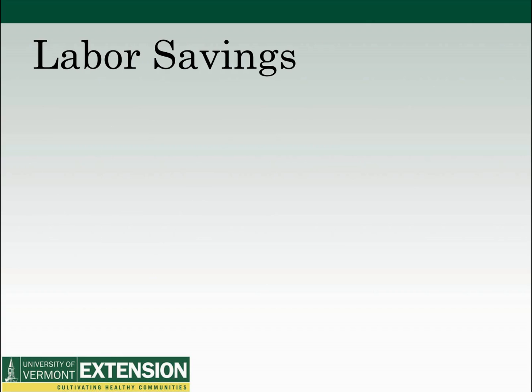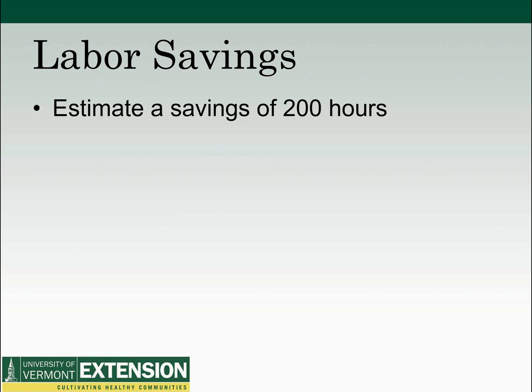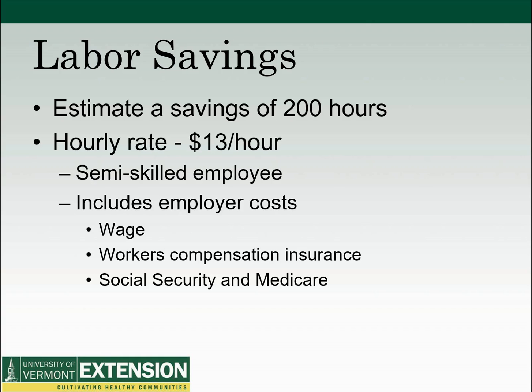Let's talk about how to calculate labor savings. We estimate that there will be savings of 200 hours. We're comparing the tractors being used for the same tasks — the old tractor and the new tractor being compared for doing identical tasks. The tractors may have been used for other things on the farm, but we're not looking into that with this partial budget. The hourly rate used for those 200 hours was $13 an hour.